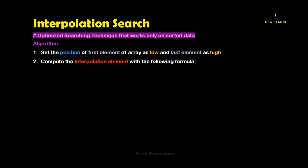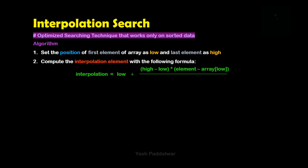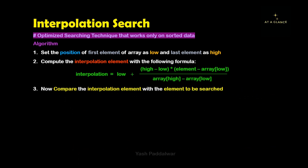The first step is to set the first element's position as low and the last element's position as high. Then we need to compute the interpolation element's position by the following formula: low plus (high minus low) multiplied by (element to be searched minus the element at the low position), divided by (the element at the high position minus the element at the low position).